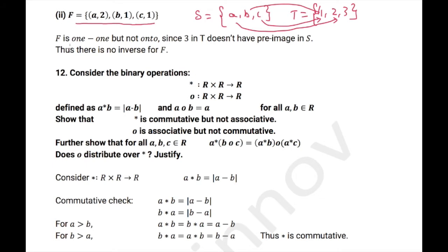So, thus it is not onto. Since the domain elements b and c have the same image in the codomain, it is not one-to-one. Also it is not onto because 3 does not have any preimage.